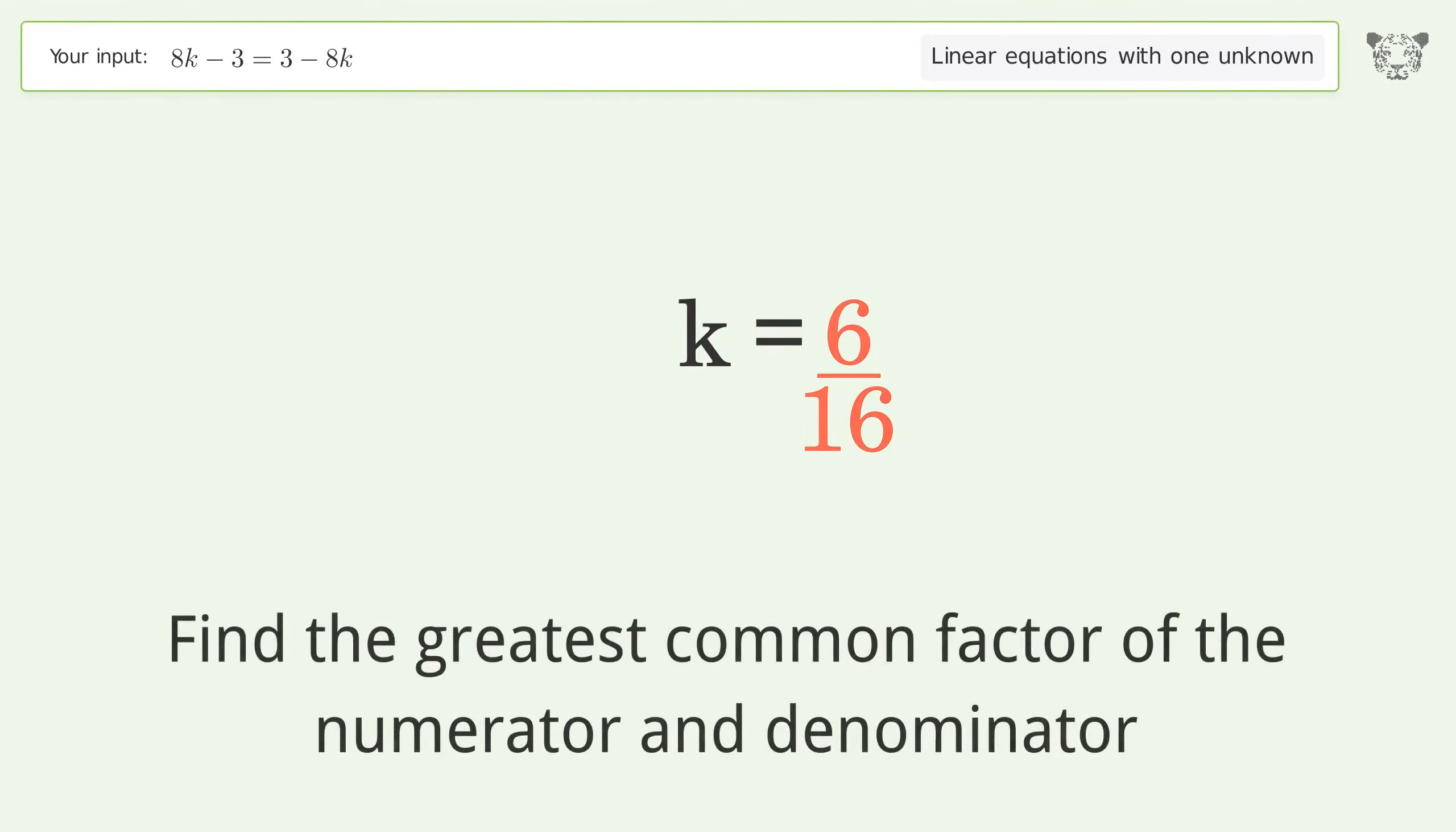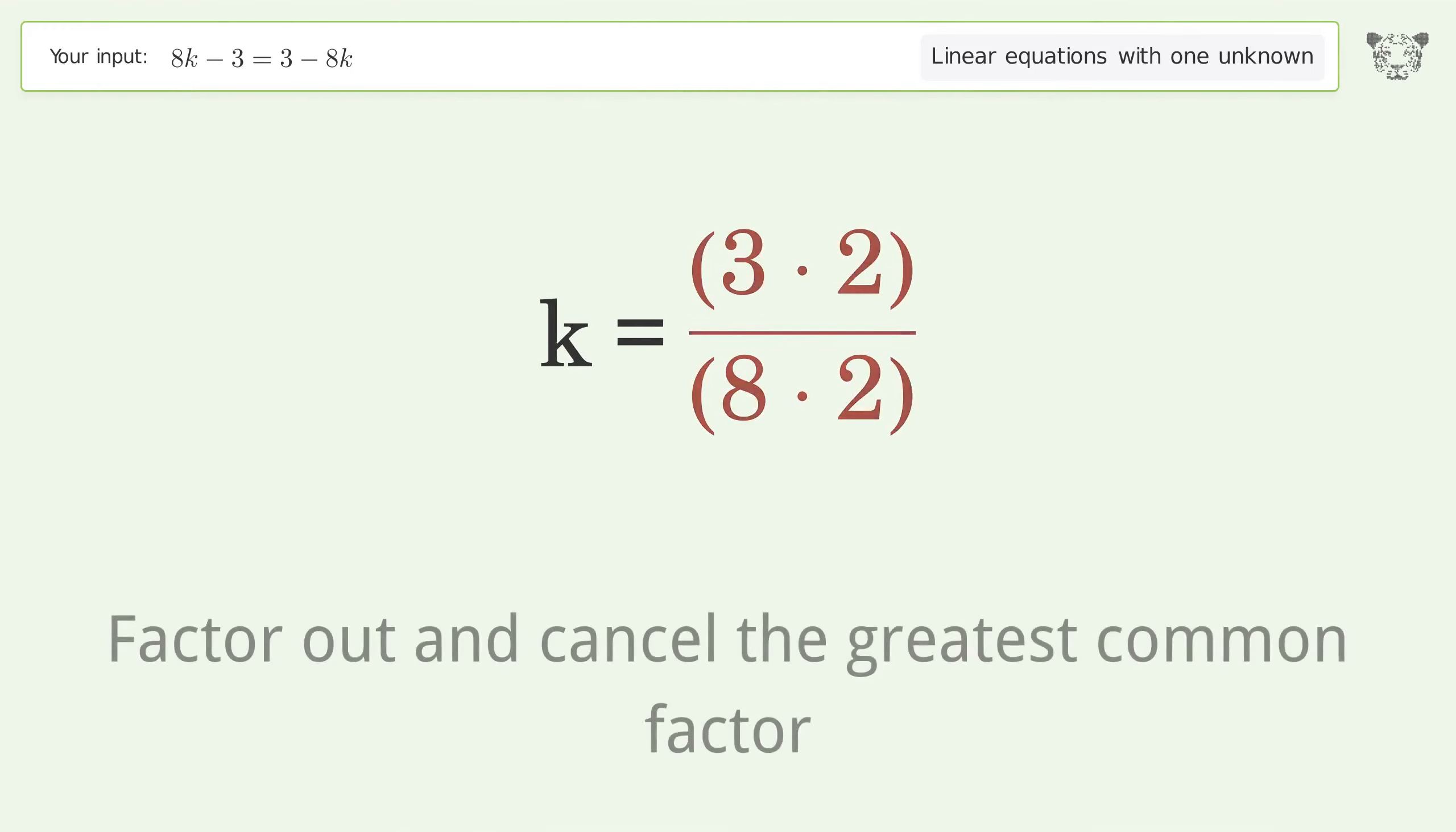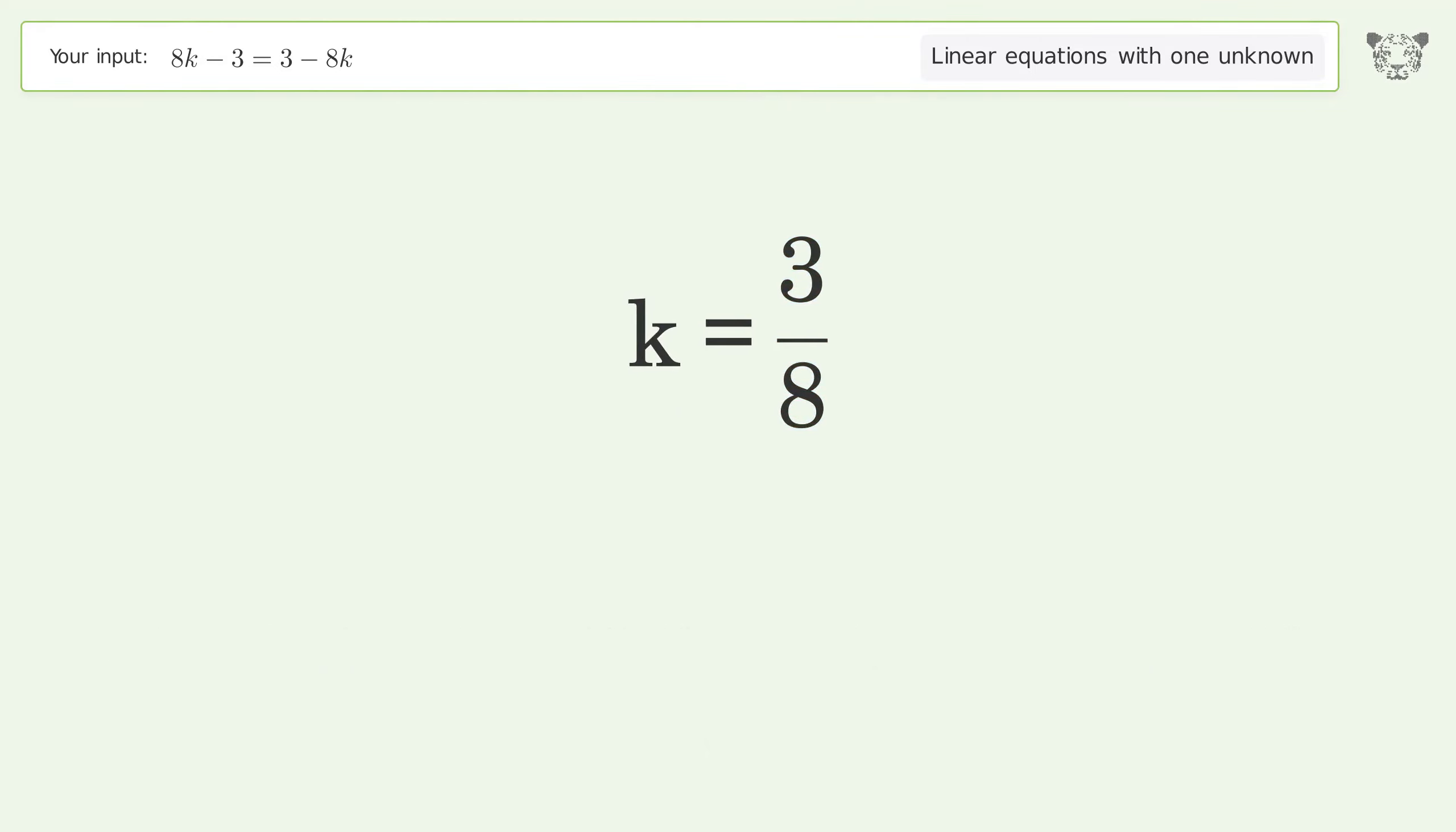Find the greatest common factor of the numerator and denominator. Factor out and cancel the greatest common factor. And so the final result is k equals 3 over 8.